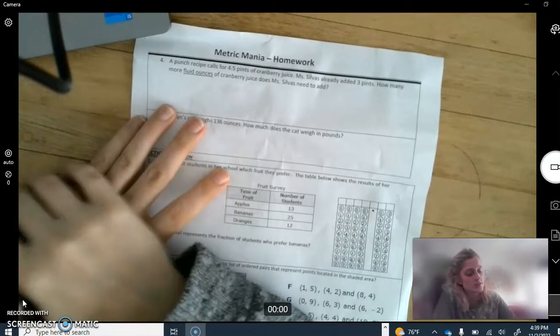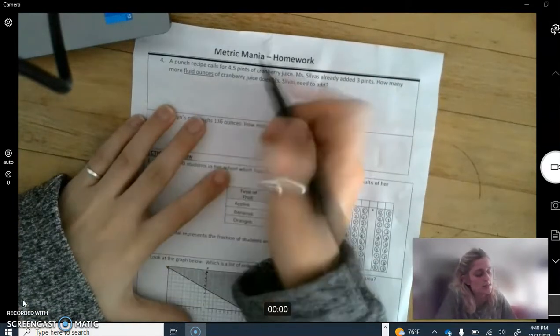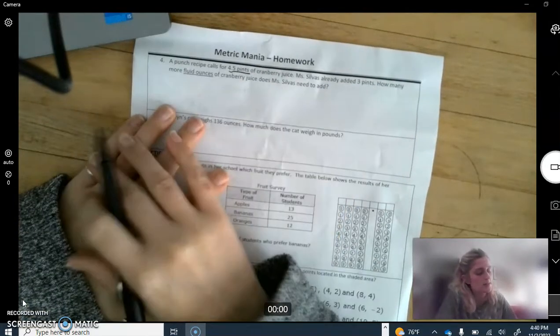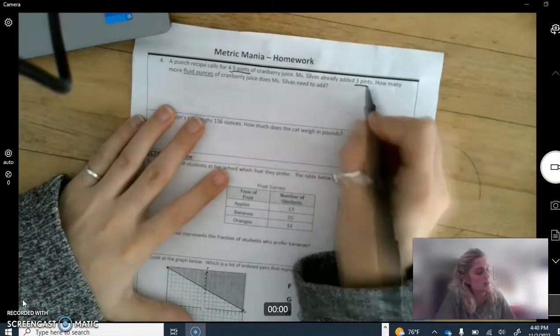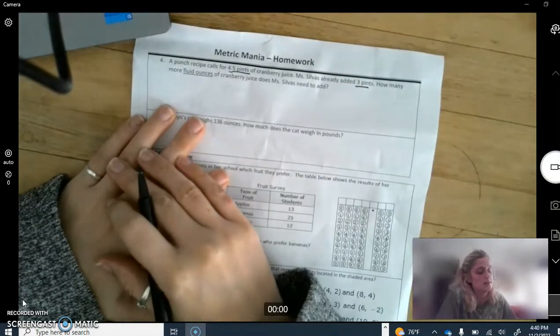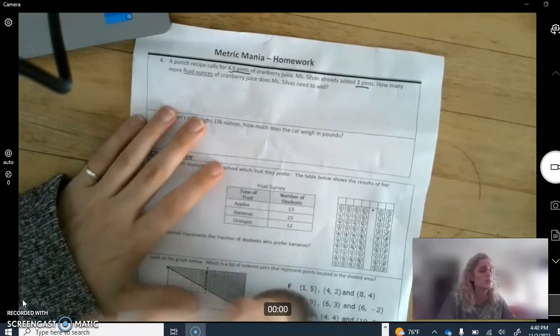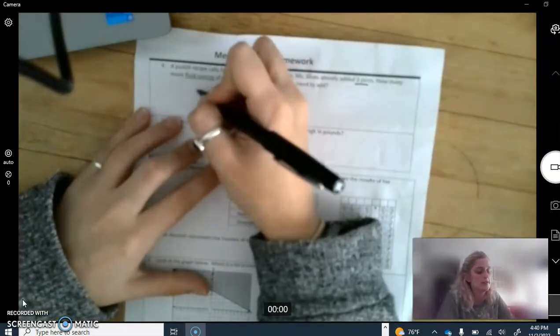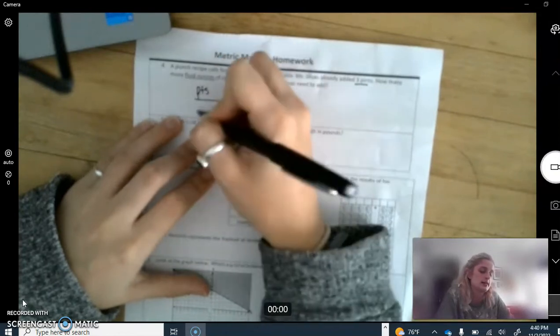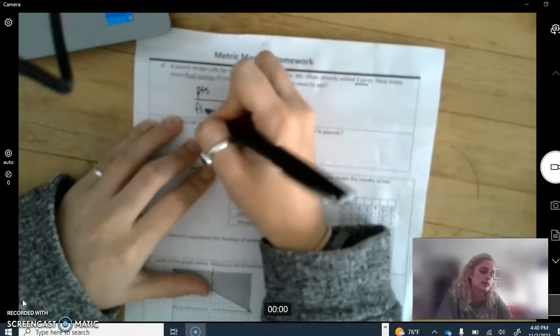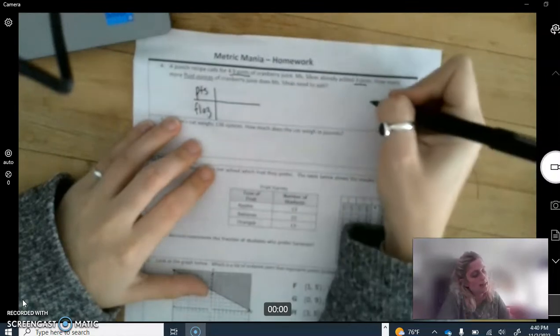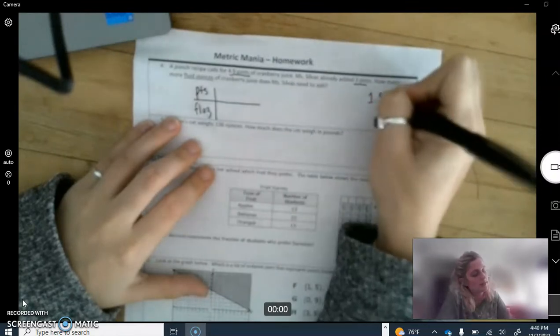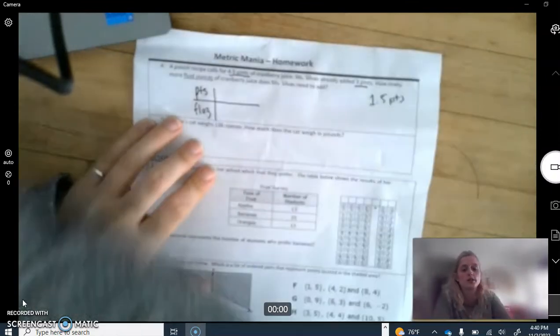Fluid ounces we have not done yet but it's on your star chart, so let's try. A punch recipe calls for 4.5 pints of lemonade juice. The syllabus has already added three pints. How many more fluid ounces? First of all, before we even look at fluid ounces, if we're supposed to have 4.5 pints and we've already added three pints, that means there's 1.5 pints left. So we're gonna do pints to fluid ounces. We have 1.5 pints, go look at your star chart.